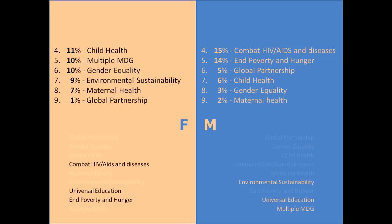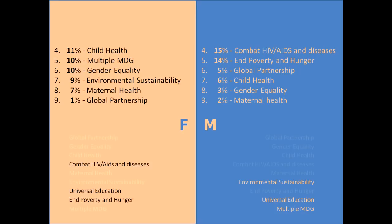In the interest of time, we'll skip a few and look at the top three. On the female side, we have combat HIV-AIDS and diseases, universal education, and end poverty and hunger. On the male side, we have environmental sustainability, universal education, and multiple MDG.